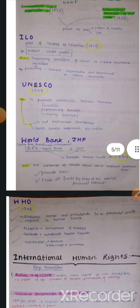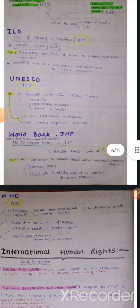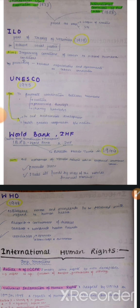The last organization here is WHO — World Health Organization — which was established in 1948. It establishes norms and standards to be followed with regard to human health. As we saw in the COVID-19 situation. It conducts research on containment of diseases, assesses worldwide health trends, coordinates between agencies, and spreads knowledge and awareness.